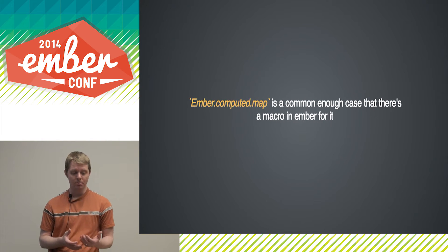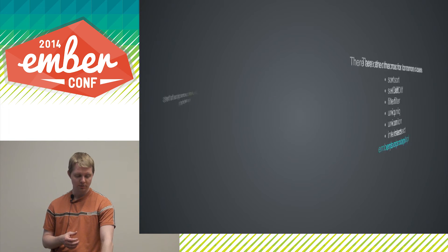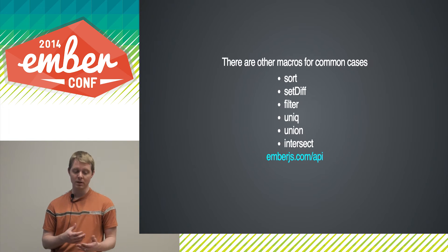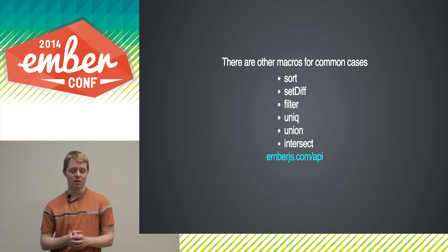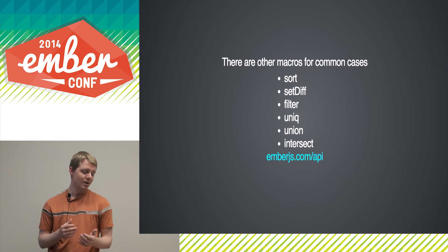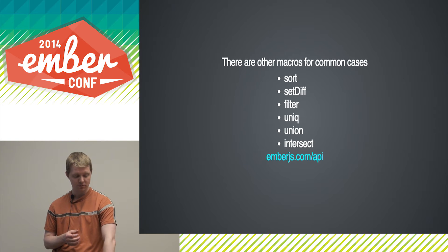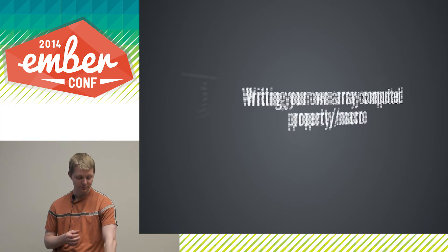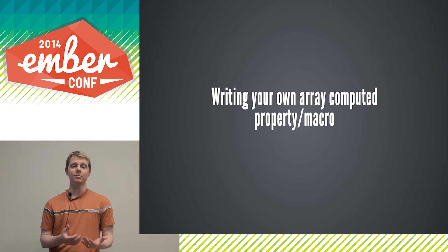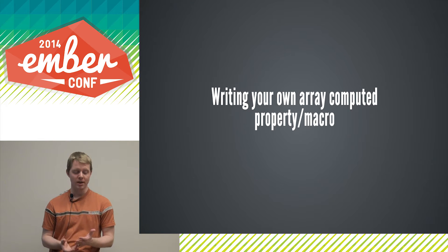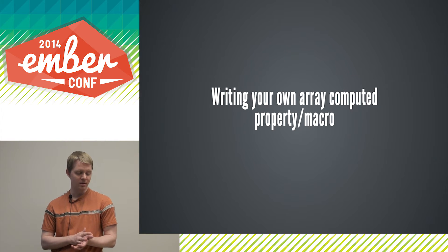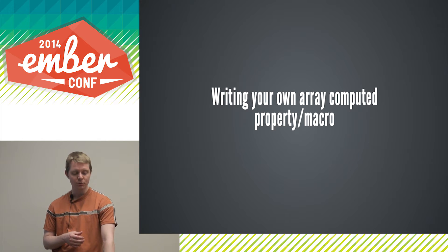Ember.computed.map is a common enough case that there's a macro for it. There are many other macros — probably the most used are map, filter, and sort, but there are a few others. However, you need to be able to write your own, and the API exists for you to do that. This is how you can write your own array computed properties or array computed macros.